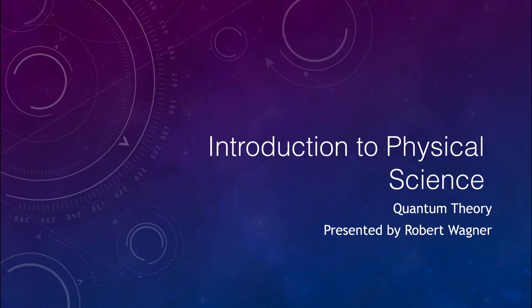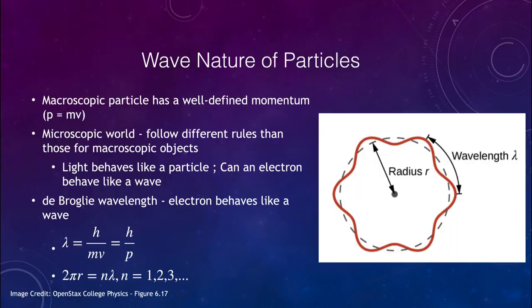Let's get started. We talked about how light had a wave and a particle nature. Well, it turns out that particles have a wave nature as well. When we look at a particle in the macroscopic world it has a specific momentum, and we discussed this back in the physics section — momentum is given by mass times velocity.